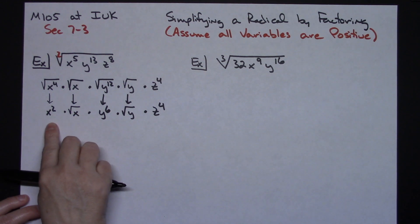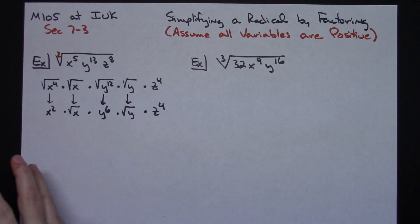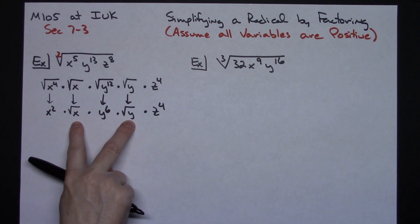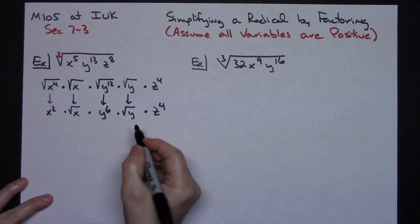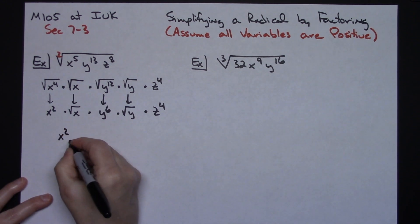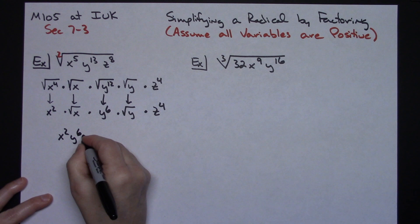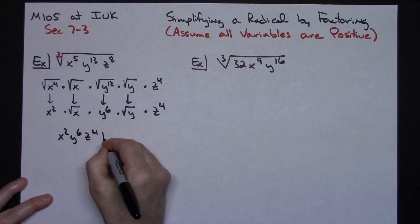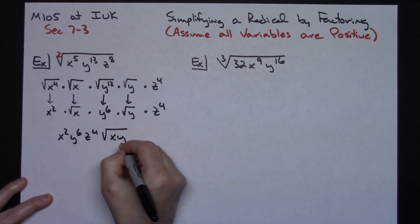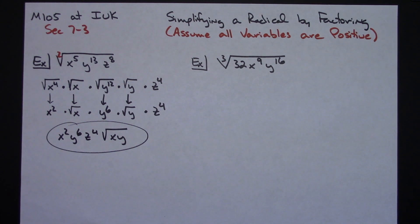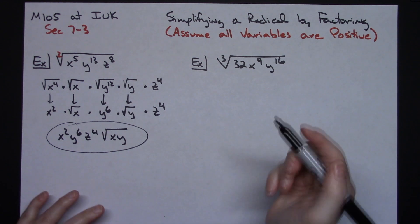At this point, you take everything that is on the outside of the bar and outside the radical and squish it together. Everything underneath the radical, you're going to multiply together. So I'm going to have an x squared, I'm going to have a y to the 6th, I'm going to have a z to the 4th, and then square root of the x times the y underneath. It is and does look like quite a bit of work, but factoring it and breaking this apart and looking at it individually is going to make it a whole lot easier, I think.